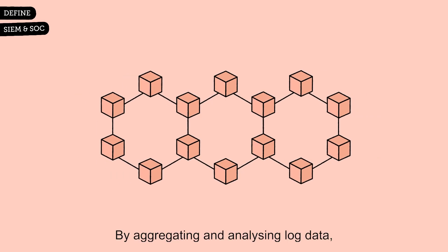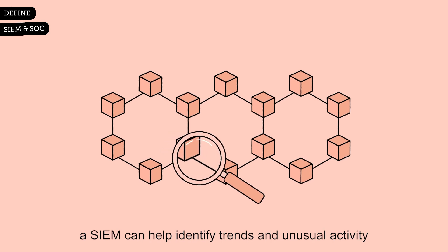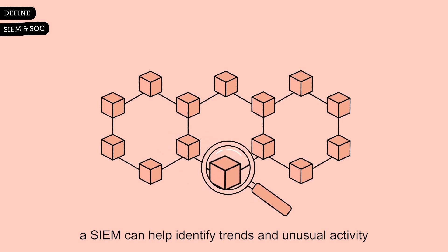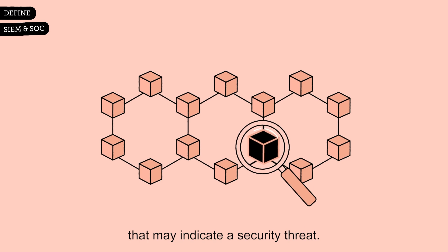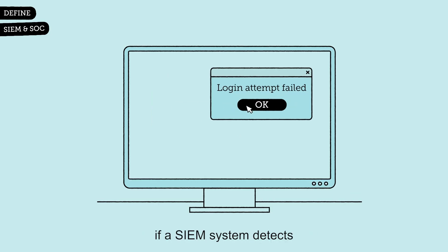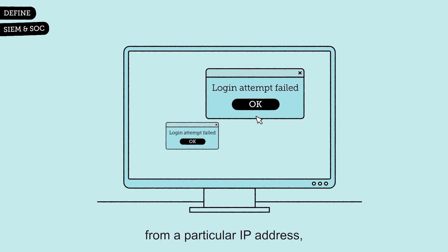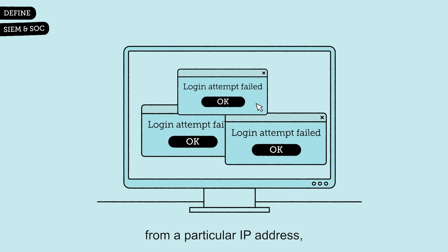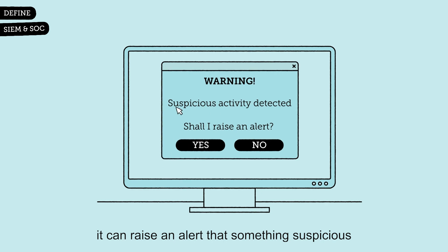By aggregating and analyzing log data, a SIEM can help identify trends and unusual activity that may indicate a security threat. For example, if a SIEM system detects that a large number of failed login attempts are coming from a particular IP address, it can raise an alert that something suspicious may be going on.